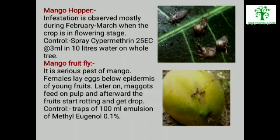Mango Fruit Fly: It is a serious pest of mango. Females lay eggs below the epidermis of young fruits. Later on, maggots feed on pulp and afterward the fruits start rotting and get dropped. Destroy infected fruits away from the field. During fruit development stage, hang traps of 100 ml emulsion of methyl eugenol 0.1%. In May, start spraying of chloropyrifos 20 EC at the rate of 2 ml per litre of water, for 3 times with an interval of 20 days.